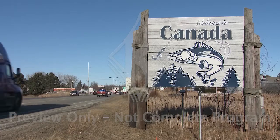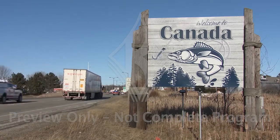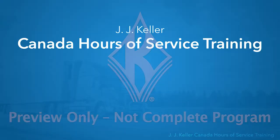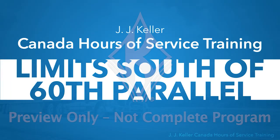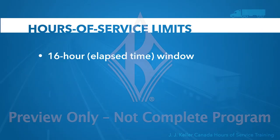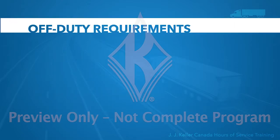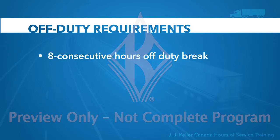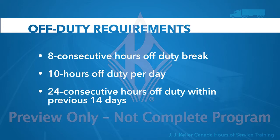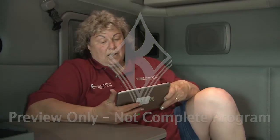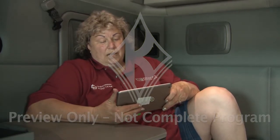In Canada, there are separate rules for two regions: south of the 60th parallel and north of the 60th parallel. You're learning about limits south of the 60th parallel. These limits include the 16-hour window, 13-hour driving limit, 14-hour on-duty limit, and the 70-hour and 120-hour on-duty cycle limits. The off-duty requirements make sure you have enough time off-duty between work cycles. They are the 8 consecutive hours off-duty break, 10 hours off-duty per day, and 24 consecutive hours off-duty within the previous 14 days.